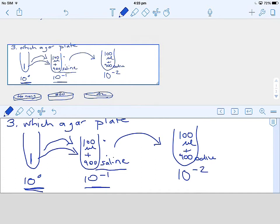If we keep with this dilution series, the third tube already has 900 microliters of saline in it. We add 100 microliters from the second tube into the third tube, and that becomes our 10 to the minus 2 dilution.